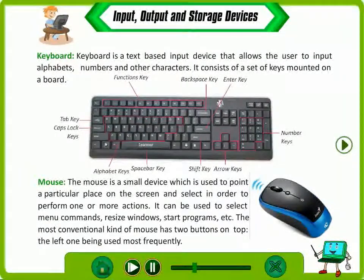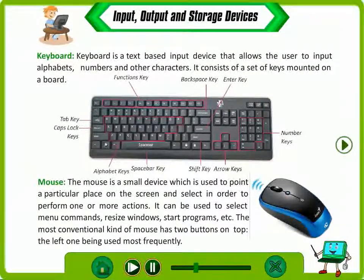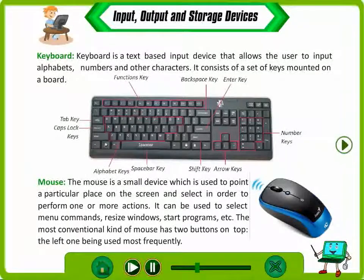The mouse is a small device which is used to point to a particular place on the screen and select in order to perform one or more actions. It can be used to select menu commands, resize windows, start programs, etc. The most conventional kind of mouse has two buttons on top, the left one being used most frequently.